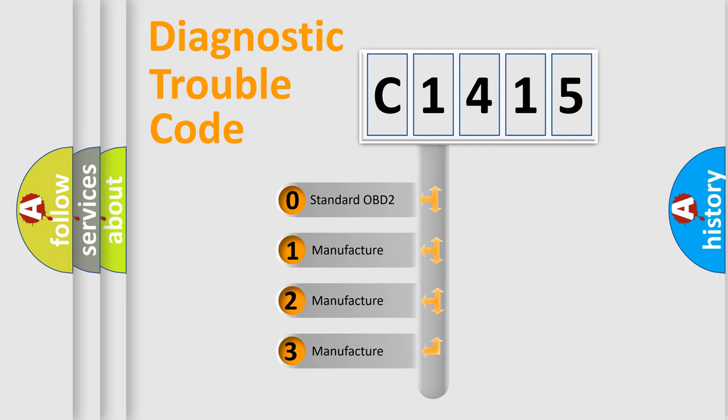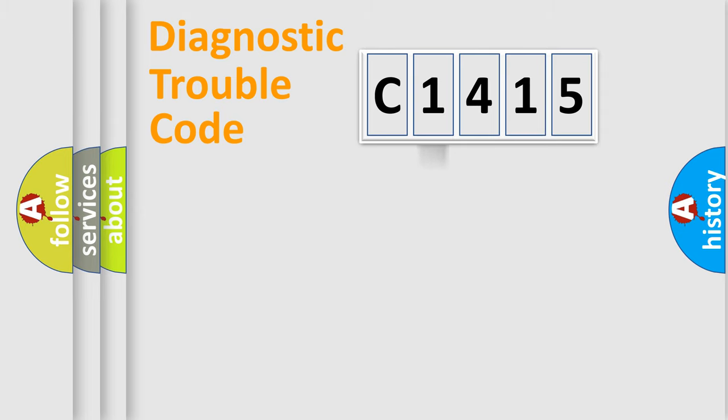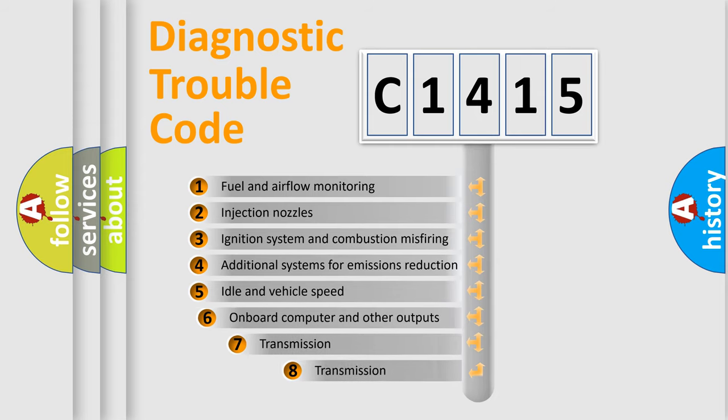If the second character is expressed as zero, it is a standardized error. In the case of numbers 1, 2, or 3, it is a more prestigious expression of the car specific error.